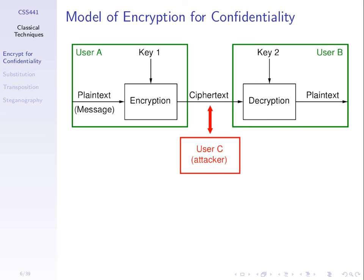When B receives the ciphertext, assuming they know the algorithm being used, they apply a corresponding decryption algorithm using a key — key two — which may be the same or different from key one. The algorithm must be designed so that decrypting the ciphertext with the correct key produces the original plaintext. If it doesn't, the algorithm doesn't work correctly.